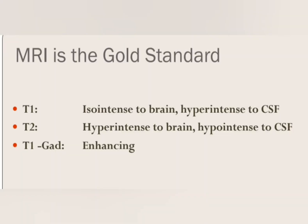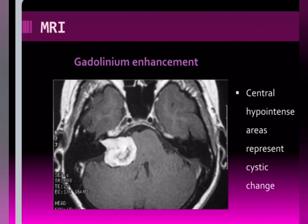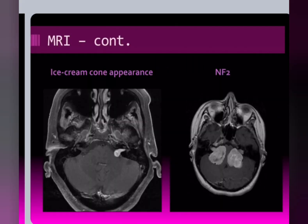The gold standard for diagnosis of acoustic neuroma is gadolinium-enhanced MRI. On T1 sequences, you can see more of the cisternal component; in another view you see more of the intracanalicular component. If there are areas of cystic changes, you can see hypointense areas. Classically, gadolinium-enhanced MRI shows an ice cream cone appearance because it has a cisternal component and the intracanalicular component.